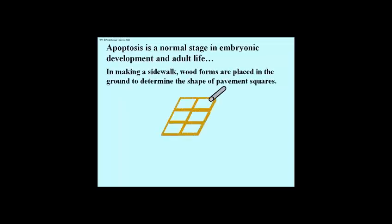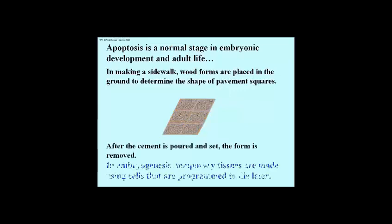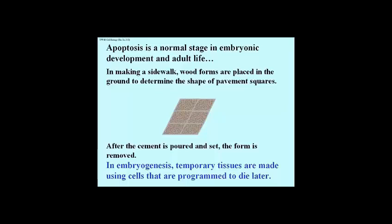As for the old saying that death is a part of life, that's nowhere more true than in the cells of an embryo. Here is a useful analogy: when workers pour a cement sidewalk, a set of wooden forms is laid out in the pattern of the eventual cement squares. Cement is poured into the forms, allowed to set, and after it hardens, the forms are removed. Think of the wood forms as embryonic cells created to guide the formation and location of subsequent cells in the embryo. Once their job is done, these cells have to undergo programmed cell death — in other words, apoptosis.